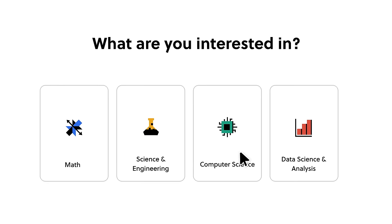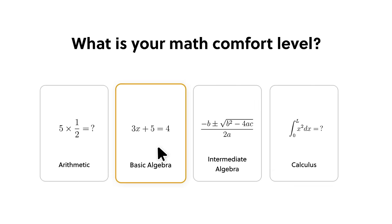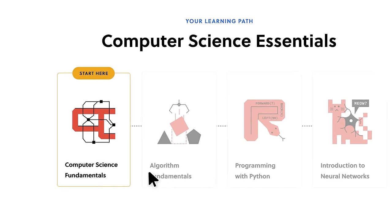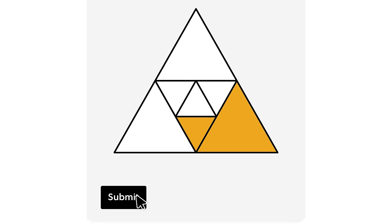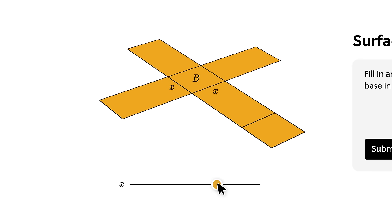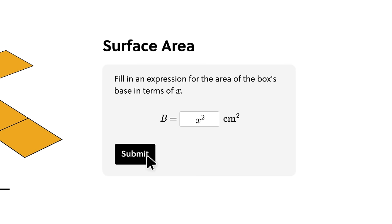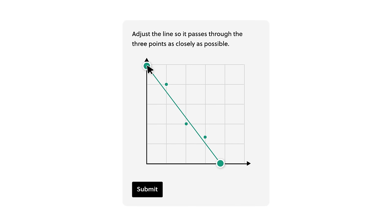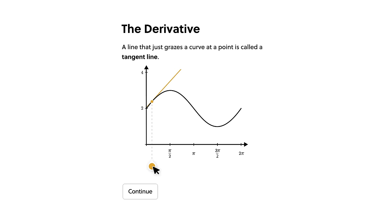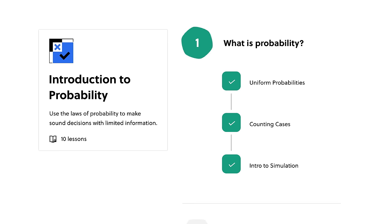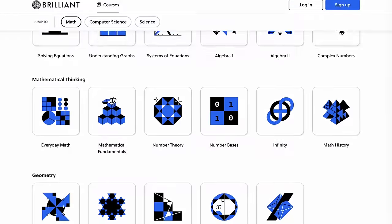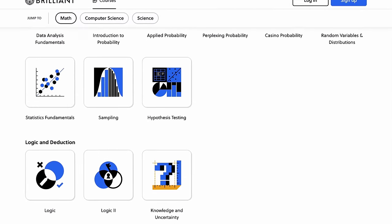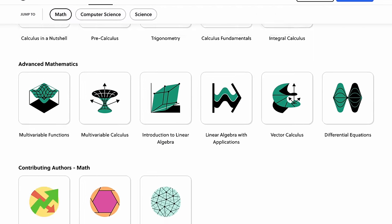This is where our today's sponsor Brilliant.org comes into play. Brilliant is an innovative educational platform that can help you advance in STEM fields in a fun and engaging way with an emphasis on active learning. Their courses contain a wide range of problem-solving exercises and beautiful interactive visualizations. So, instead of simply memorizing facts, you get to develop a deep understanding of the concepts and apply them in real-world situations. And the courses are fully self-paced, so you can learn in bite-sized chunks just by dedicating 15 minutes a day. Brilliant offers over 80 courses, covering a variety of topics in math, physics, computer science and more.